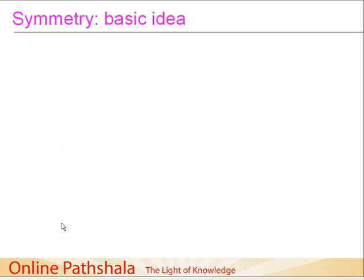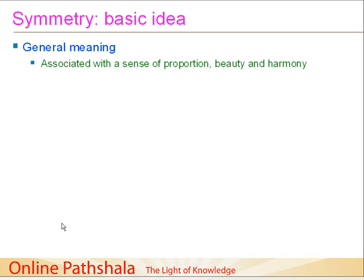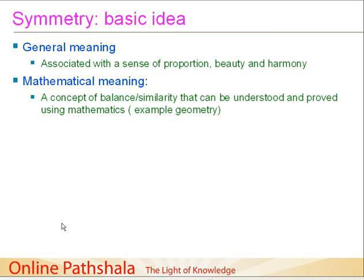Let me ask you a question. If somebody says 'wow, this thing is beautiful' or 'this is so well balanced,' what does that imply? What is it you're trying to convey beyond the words beautiful — is it related to a sense of proportion, a sense of well-balancedness? That is precisely what symmetry is. The general meaning of symmetry is associated with a sense of proportion, beauty, and harmony. The mathematical meaning of symmetry implies a concept of balance or similarity that can be understood and proved using mathematics. In this chapter, we use geometry to study symmetry.